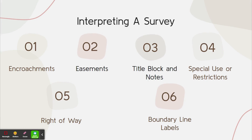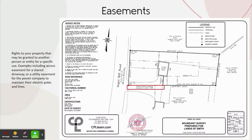Next are easements. These are rights to your property that may be granted to another person or entity for a specific use. Examples include an access easement for a shared driveway or a utility easement for the power company to maintain their electric poles and lines. In this instance, it's for a shared asphalt driveway easement, and you can see that the deed book and page is clearly called out.